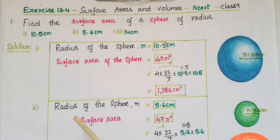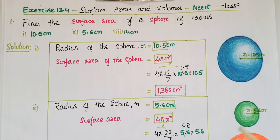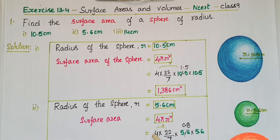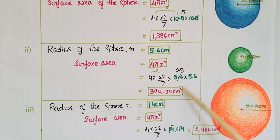For the second one, the radius of the sphere is r = 5.6 centimeters. The surface area is 4πr², that is 4 × (22/7) × 5.6 × 5.6, which equals 394.24 centimeters square.